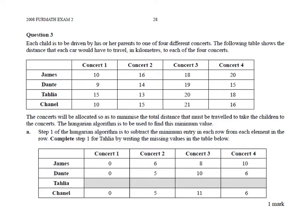If we look at Talia's row here, the smallest number in that particular row is 13. So we need to subtract 13 from each of those numbers. Down under the table under part A, we need to enter the values 2, 0, 7, and 5.